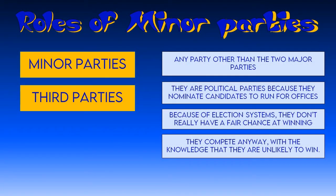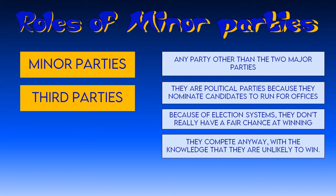Let's get a good understanding of what a minor party is. We call these minor parties or third parties — those are just the terms used in U.S. politics. A minor party is any party that's not the Democrat or Republican Party. They are political parties because they run candidates for office. Because of the election systems we use here in the United States — especially single-member district elections in Congress and the Electoral College winner-take-all system for president — they don't have a fair chance of winning, but they compete anyway.